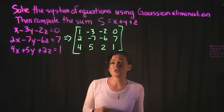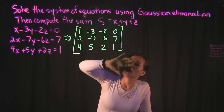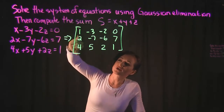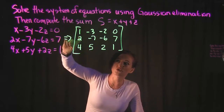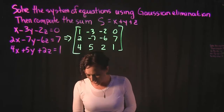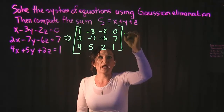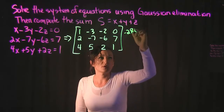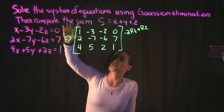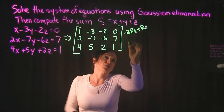When solving using Gaussian elimination, we want to get ones along our diagonal and everything else equal to zero. We start by trying to get the values in the second and third rows equal to zero. The first step is to take row 1, multiply it by negative 2, and add that to row 2.